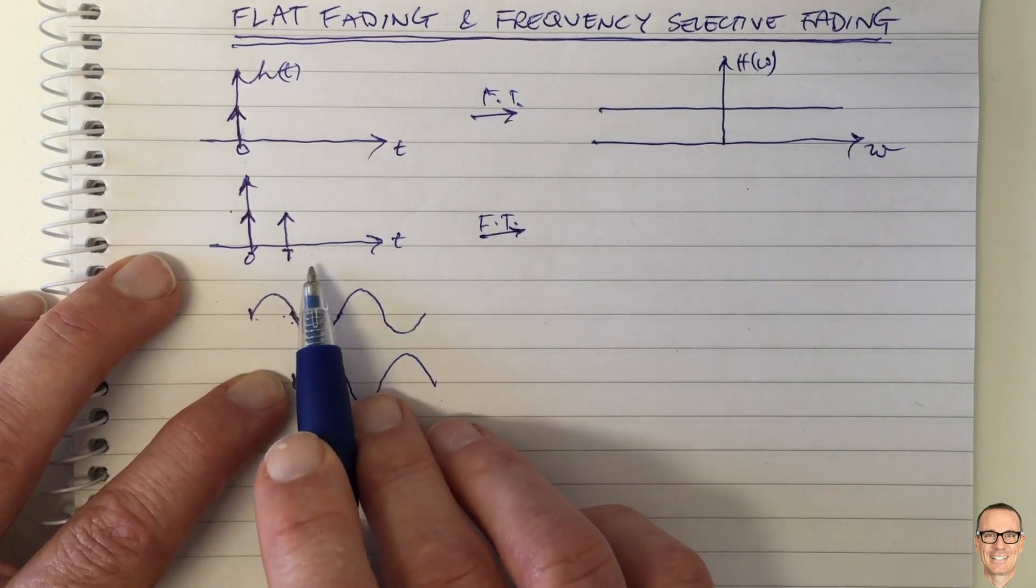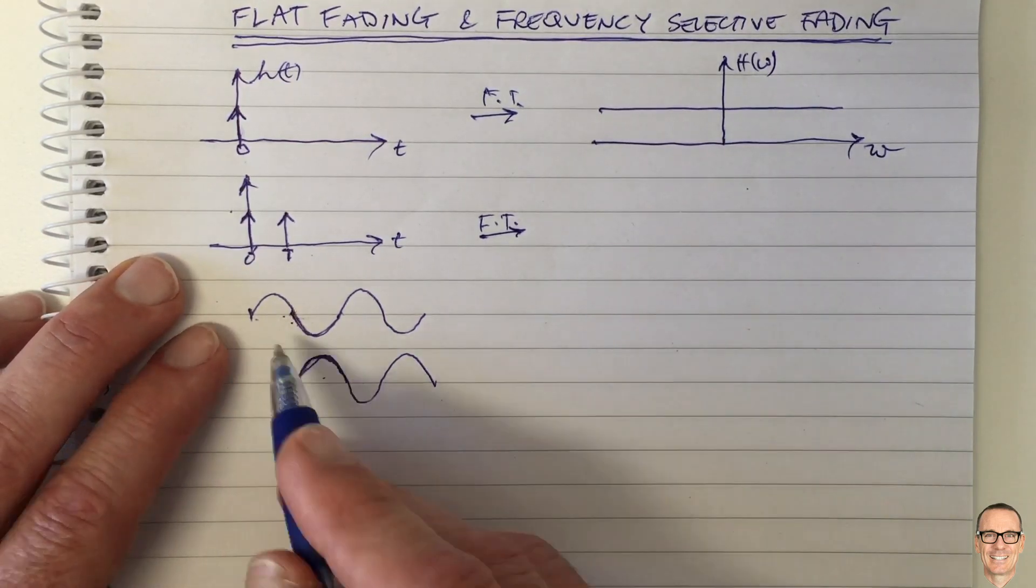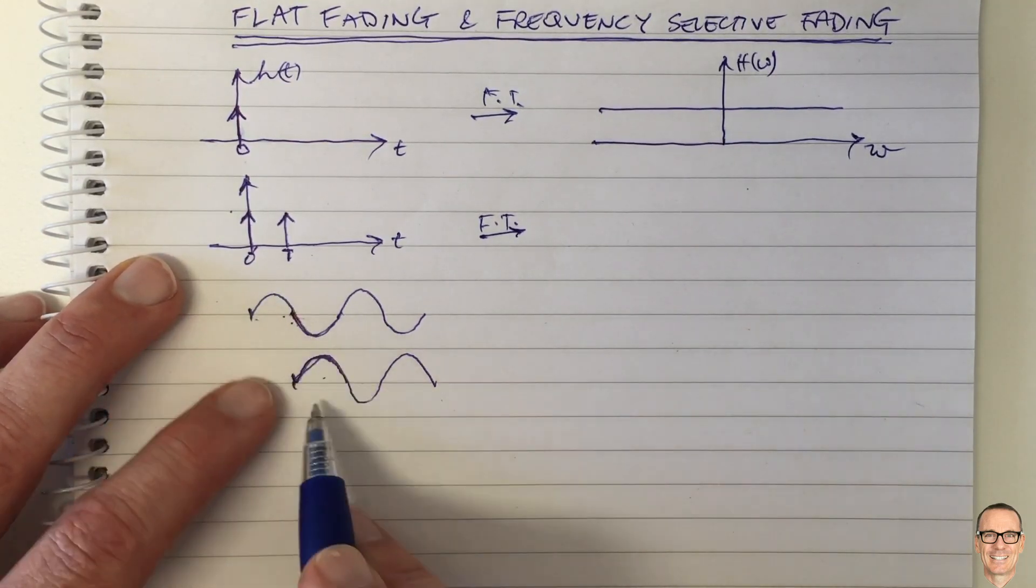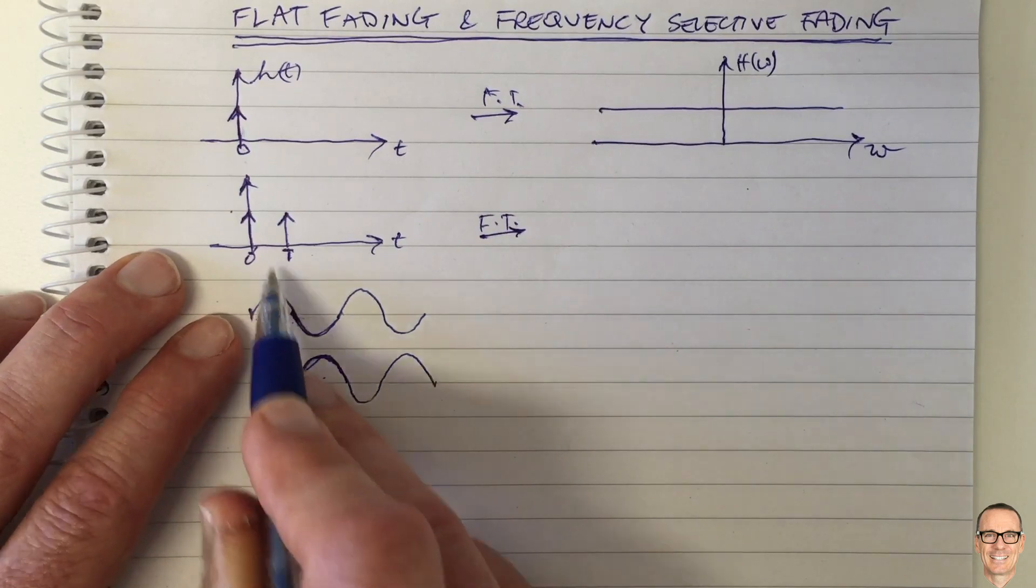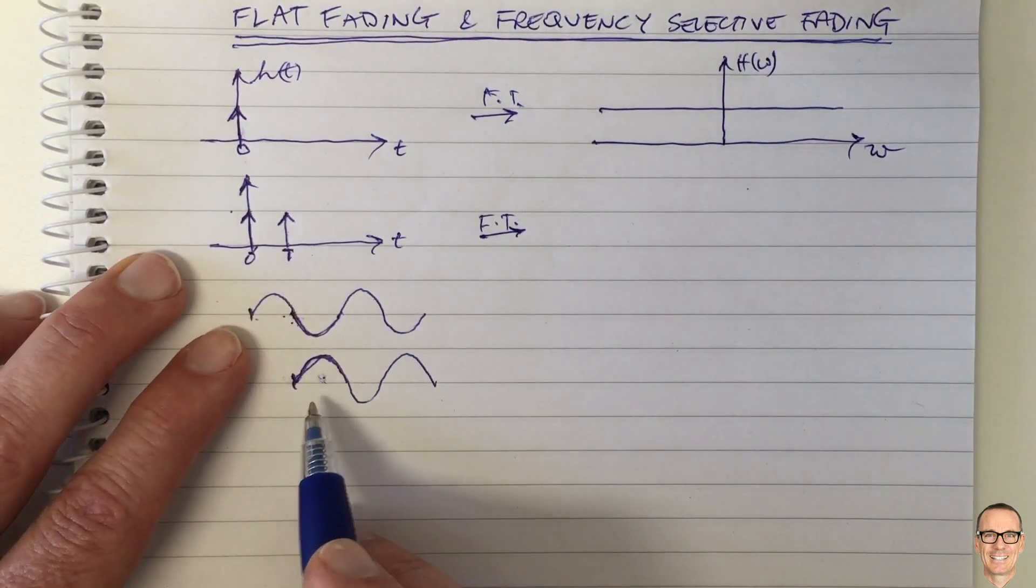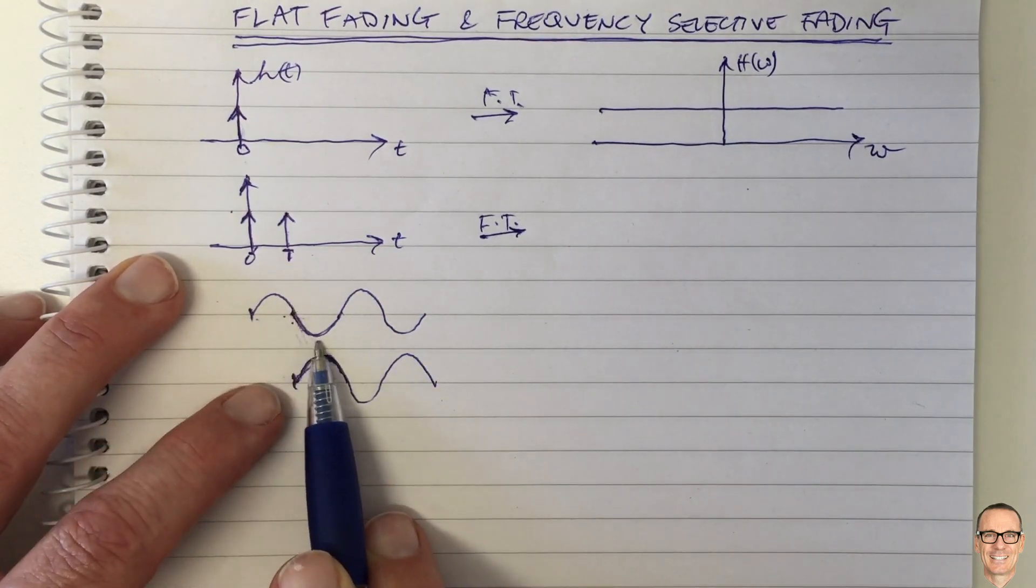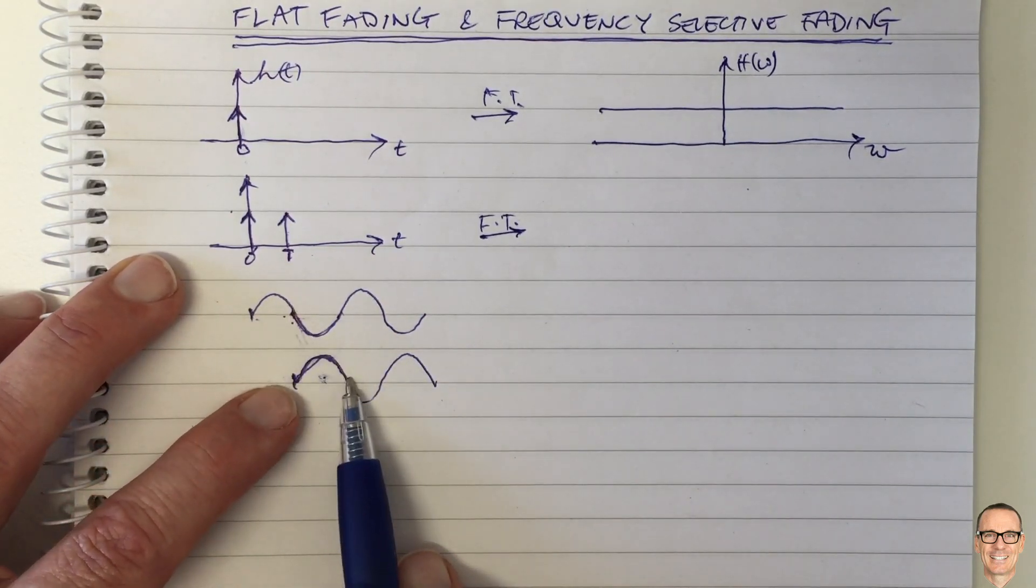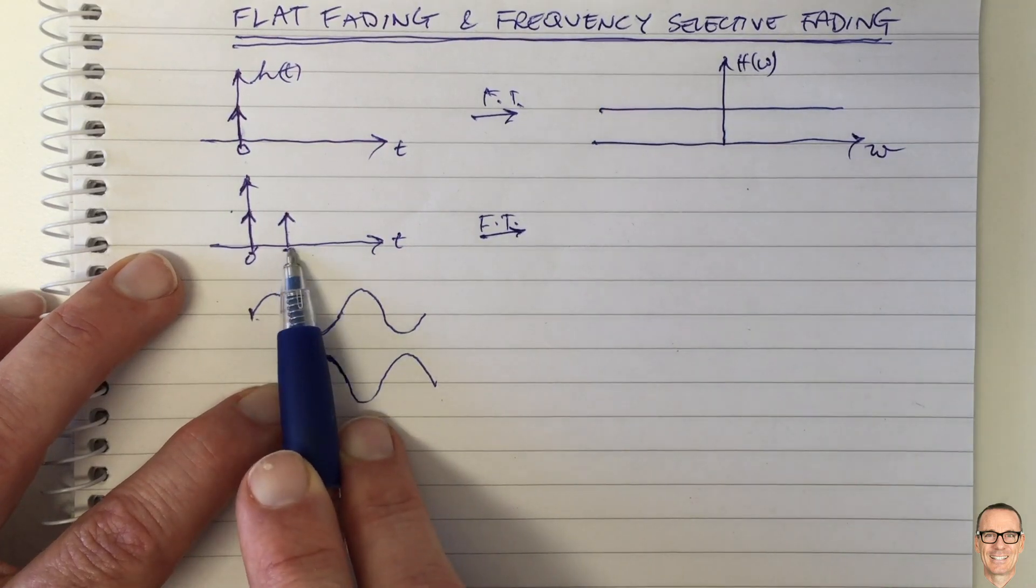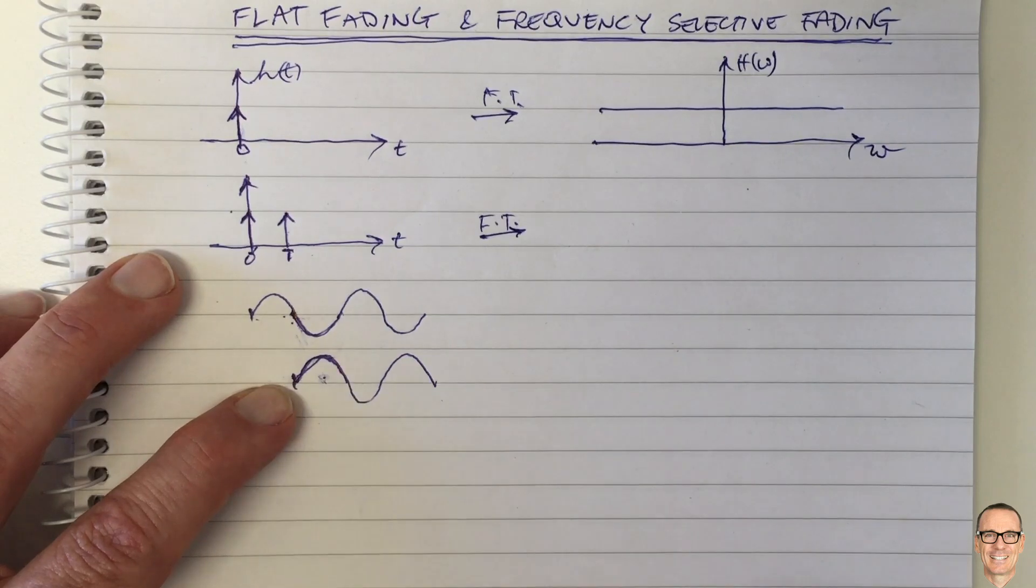So this is starting to see that it's going to be frequency dependent. Because if I had a waveform which was at a different frequency, then I think you can see that these two pulses here would not completely cancel. So any other frequency, you're not going to get this situation where this negative is exactly cancelled by the positive that comes from the second path. So this is a two path channel. So you can see that that's frequency dependent.